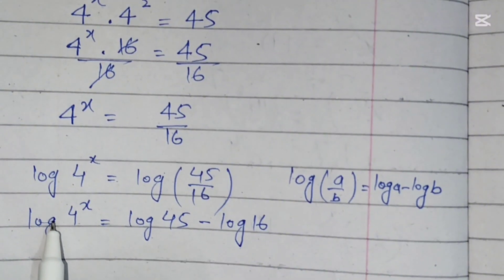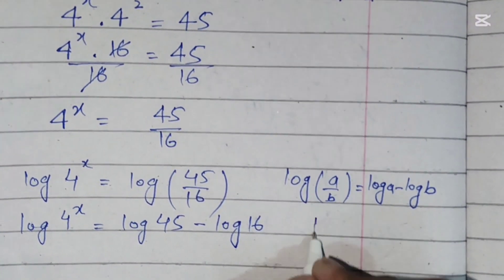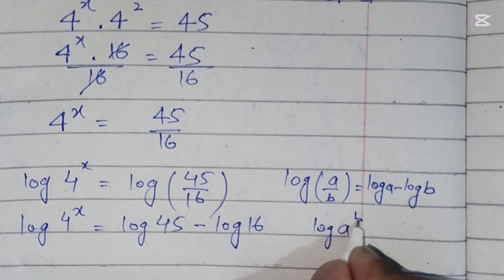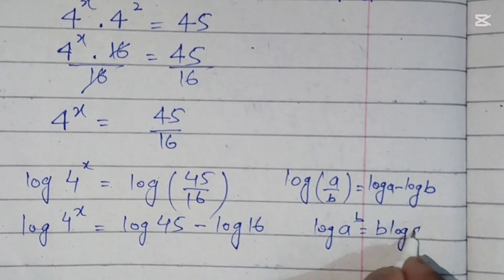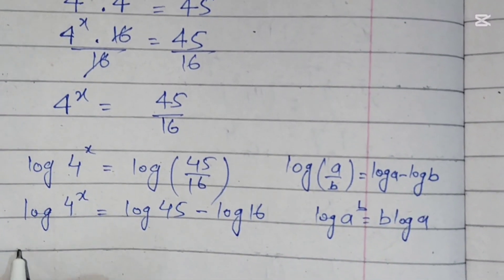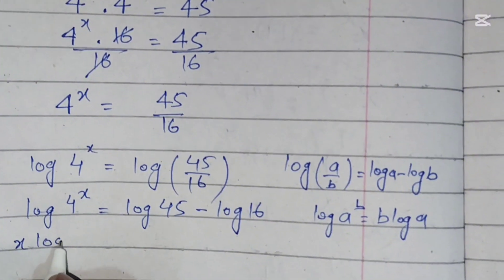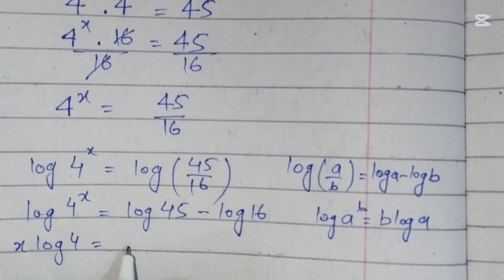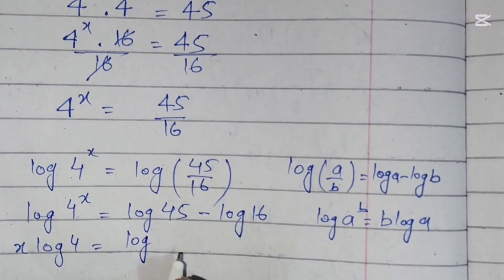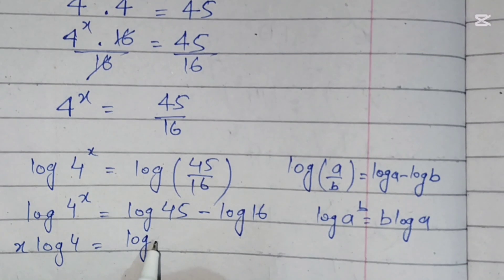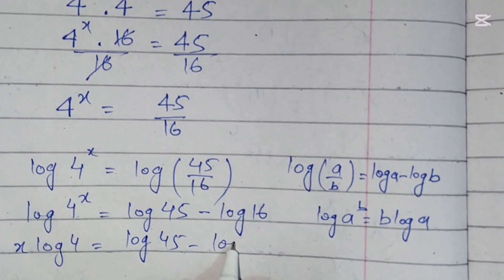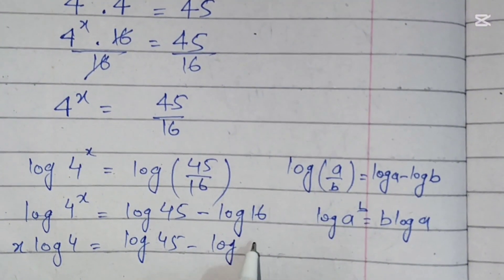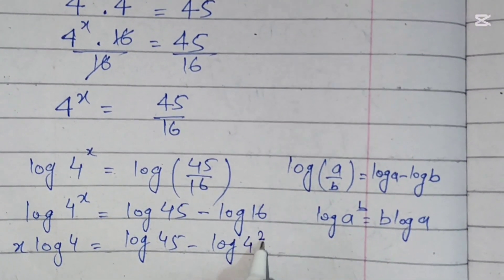On the left hand side we will use the formula: log of a power b equals b times log of a. Applying this, we get x times log of 4 equals log of 45 minus log of 16. Note that 16 can be written as 4 squared.